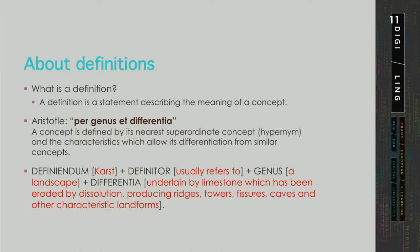An example is the sentence seen on the slide, where karst, as a definiendum, is defined as a kind of landscape, and the distinguishing properties of this landscape are that it evolves on limestone and has been eroded by dissolution, thus producing different karst features, such as ridges, caves, towers, fissures, and so on.